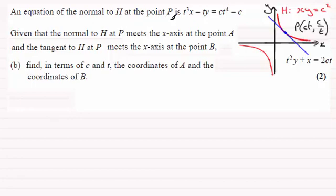So if we put on the normal then at this point P, it's going to look something like this. Okay? And that means that this point here where it crosses the x-axis is the point A. And remember the point where the tangent crosses the x-axis is B.